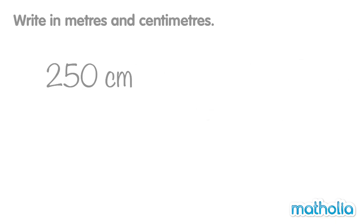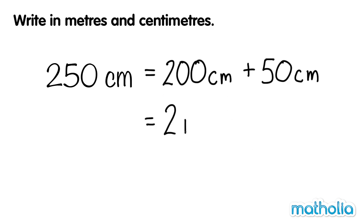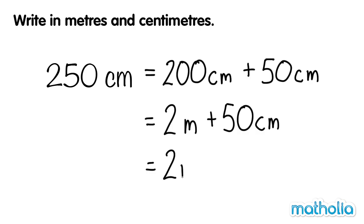Let's write 250 centimetres as metres and centimetres. We can write 250 centimetres as 200 centimetres plus 50 centimetres. 200 centimetres is equal to 2 metres. So 250 centimetres equals 2 metres plus 50 centimetres. So 250 centimetres equals 2 metres 50 centimetres.